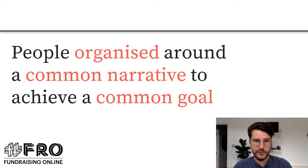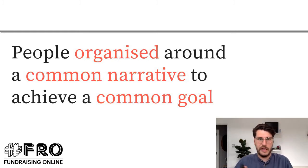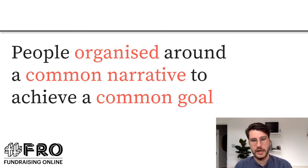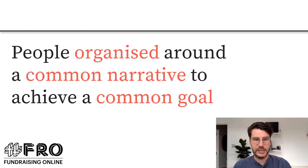Secondly, successful movements always have a powerful story that binds together everyone who's in the movement and brings people into it. This story is what can take the disparate parts of the movement and pull them in the same direction to achieve that common goal. Finally, movements need to be organised at some level to harness the power of the people involved. This can either be very grassroots and bottom-up — think Black Lives Matter or Me Too — or it can be organised more centrally through a body like a political party or a charity.